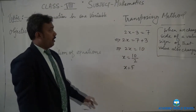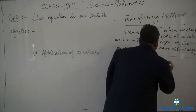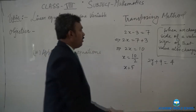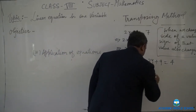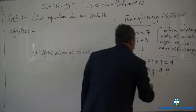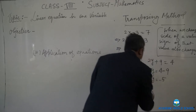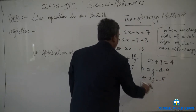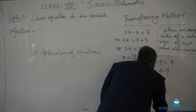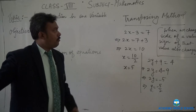Now let us take another example: 2y + 9 = 4 using transposing. First take 9 to the right side. Since 9 is addition on the left, it becomes subtraction on the right: 4 − 9 = −5. So 2y = −5. Now bring 2 to the right side — since 2 is multiplication on the left, it becomes division: y = −5/2.